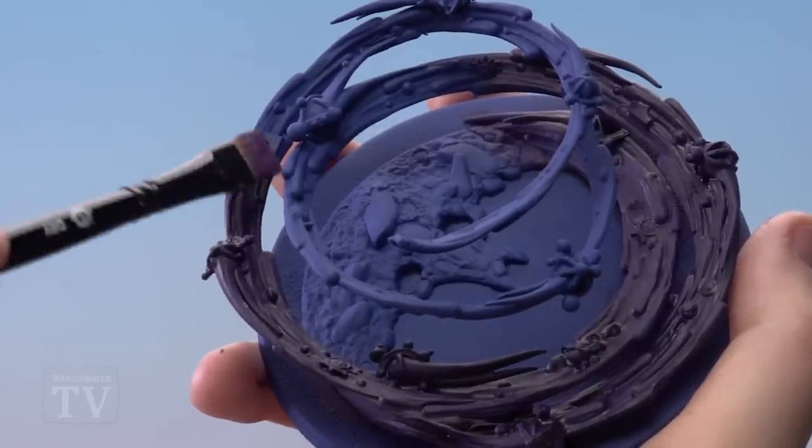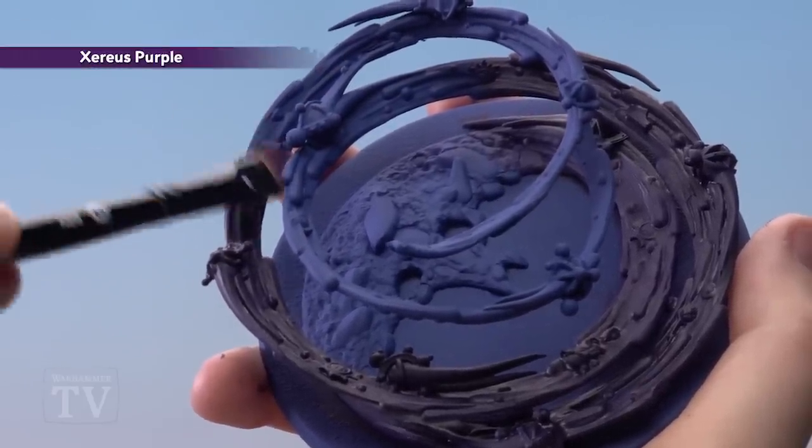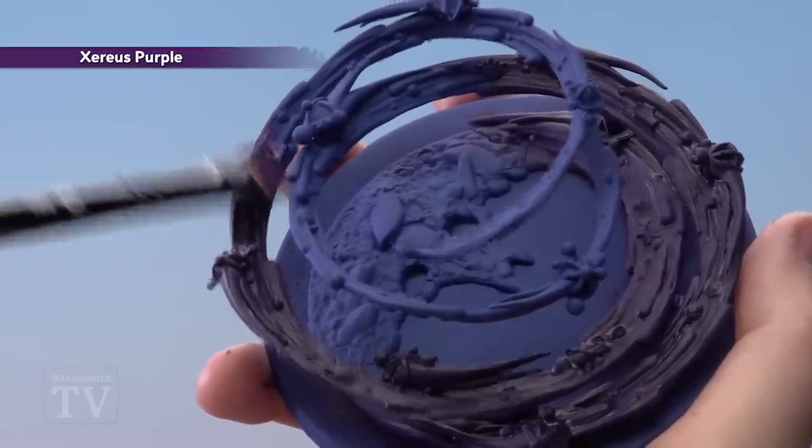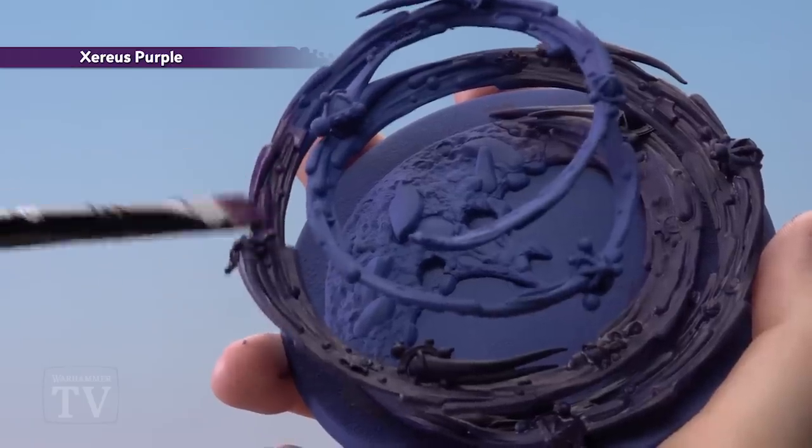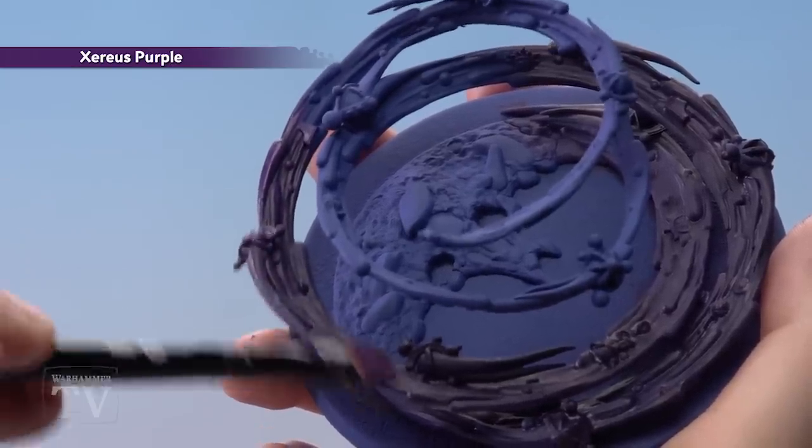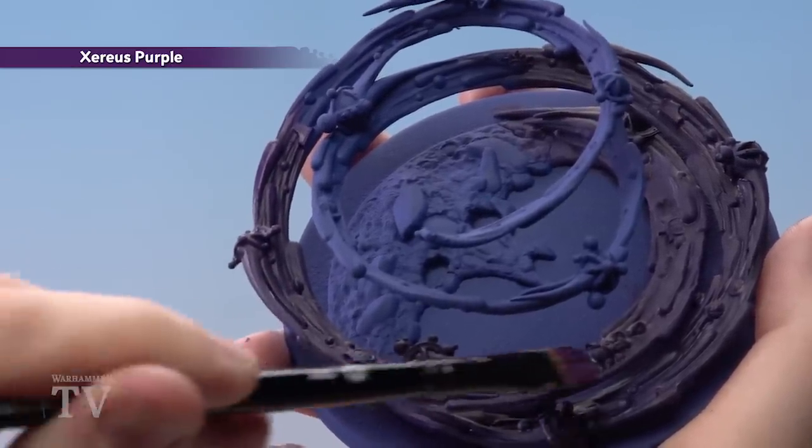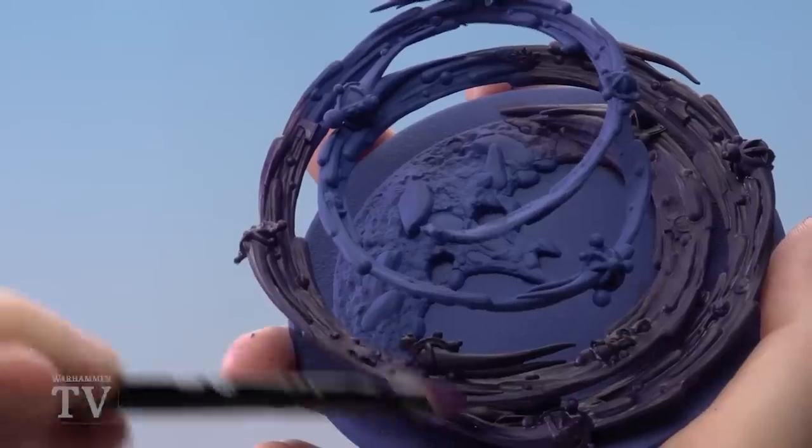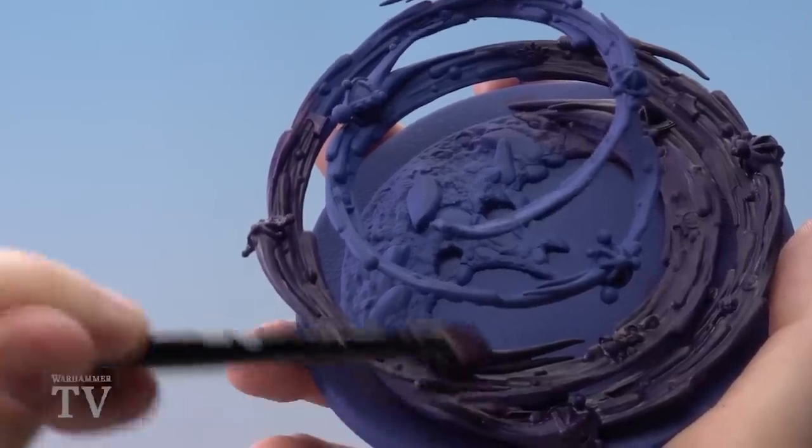So what we're going to do now is start dry brushing with Xereus Purple. Now I'm going to do a little bit on the blue as well just to get a bit of a blend going on and I'm going to work all the way down to about a third of the way down just so you get a bit of a transition so it's a bit darker at the very base of the swirl. Just take your time in building this dry brush up of Xereus Purple.